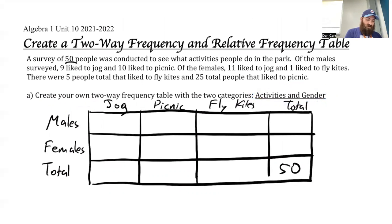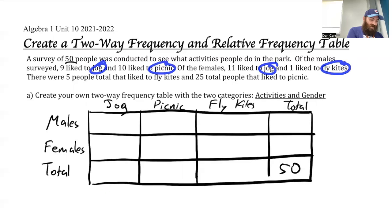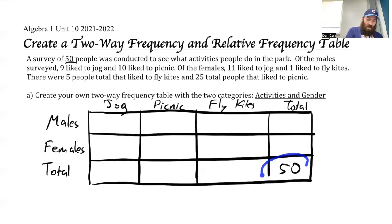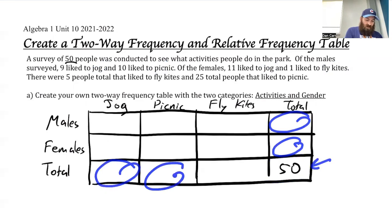I looked at what activities appeared: jogging, picnic, and fly kites. So those are three things that are happening — jogging, picnics, and flying kites. 50 total people were surveyed, so that's going to go in this lower right box. Whatever number goes in the row totals should add up to 50, and whatever goes in the column totals should also add up to 50.